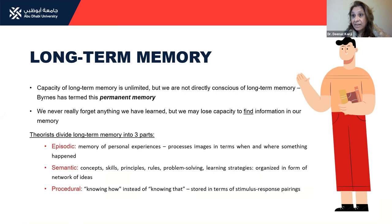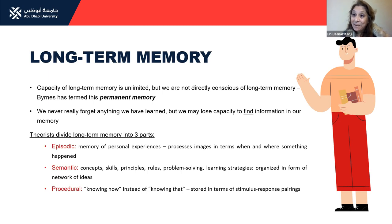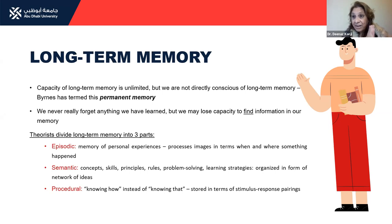Theories have divided how the brain remembers into three different parts. The first is called episodic memory — memories of personal experiences that were really, really strong. There are certain things you never forget: maybe the first time you had a car accident, maybe the time you graduated. These are episodic memories. The second is semantic memory — this is where it's important for learning. When your students are learning, they remember the concepts, the skills, the rules, the problem solving. All of these are organized in a network of ideas.